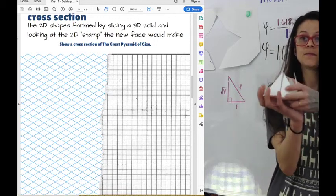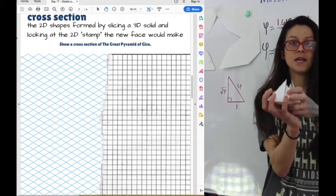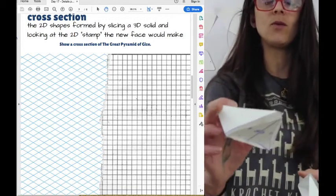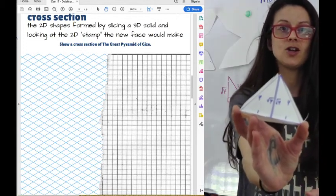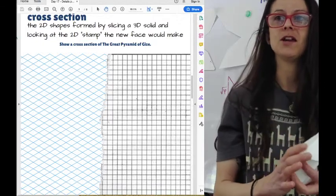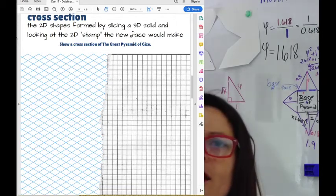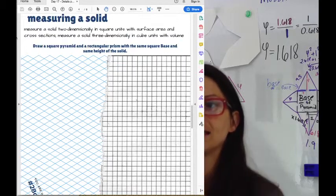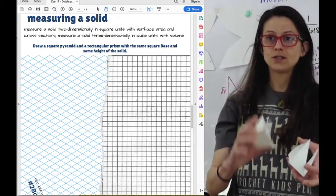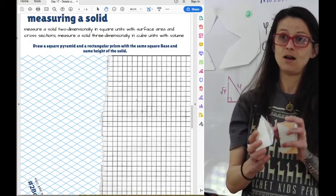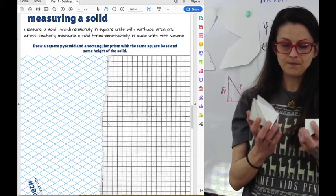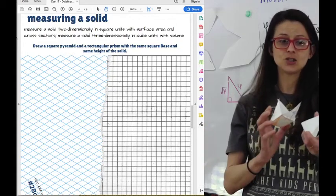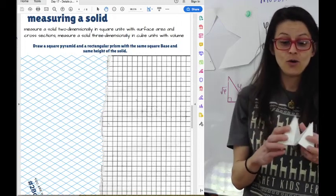Cross sections are 2D shapes formed by slicing a 3D solid and looking at the 2D stamp that the face would make. So if we were to slice this pyramid through the apex, where the slice is going to be perpendicular to the base, I'm going to be cutting right along those lines. I'm cutting this because I'm imagining that I'm slicing this pyramid into two equal halves.